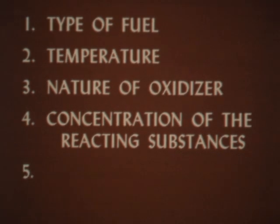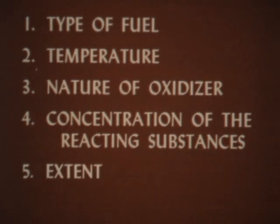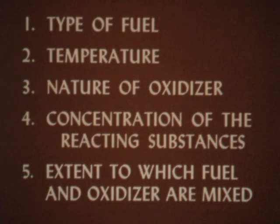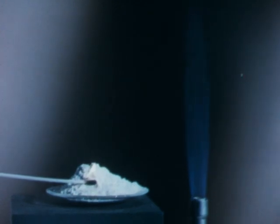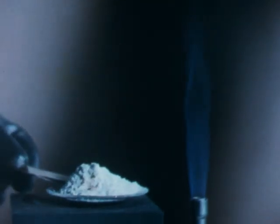The fifth factor affecting the rate of combustion is the extent to which fuel and oxidizer are mixed. Wheat flour in a pile burns slowly because only the surface area of the flour pile can mix with the oxygen in the air. When flour is dispersed in air as a dust, each particle of the flour is surrounded by the oxygen in the air and combustion takes place at a rapid rate.